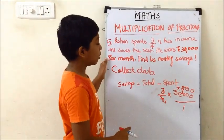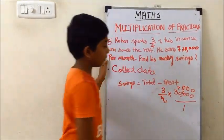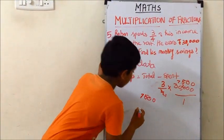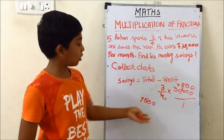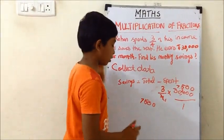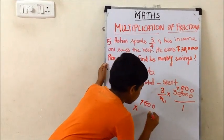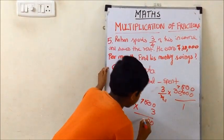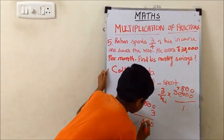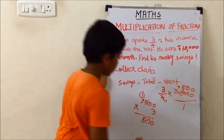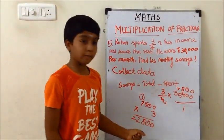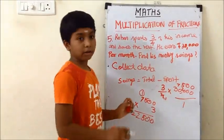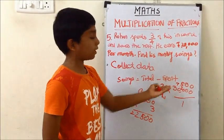The next step is to multiply 7,500 by 3. The answer we get is 22,500. So we now have the spent amount: 22,500.